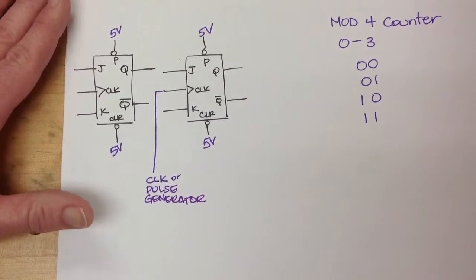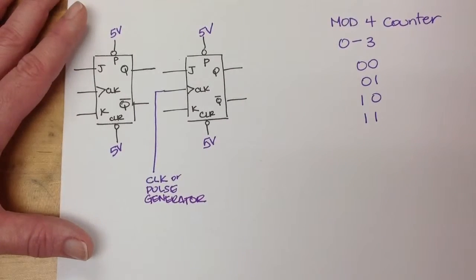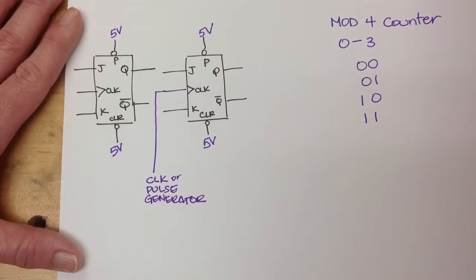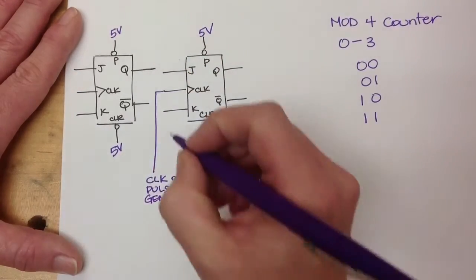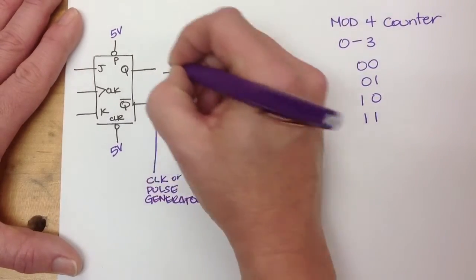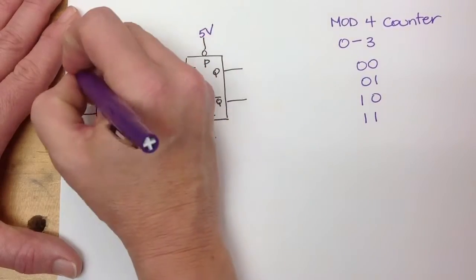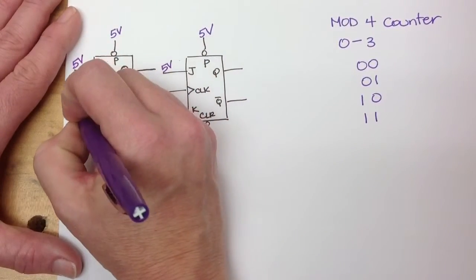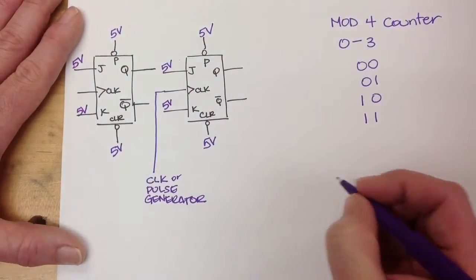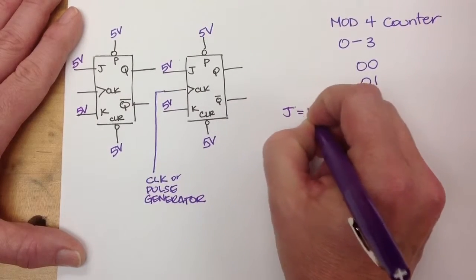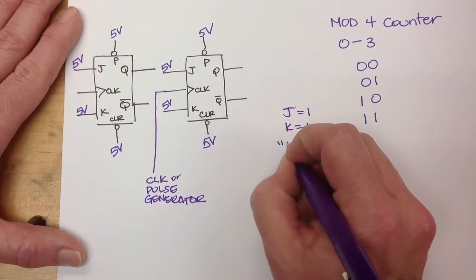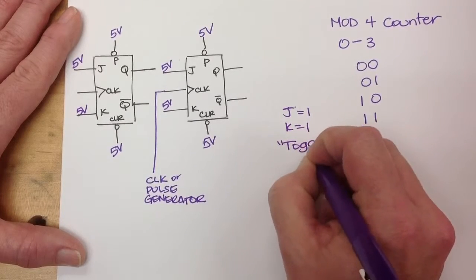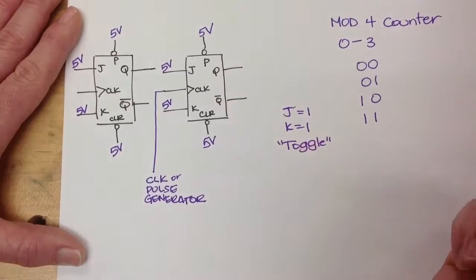Okay, so the other thing is I want to put the JK flip-flops in the toggle state, so I'm going to connect them to 5 volts as well, because I want them to be 1 all the time. So I want J and K so that both flip-flops are in the toggle state, all right?